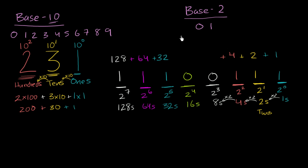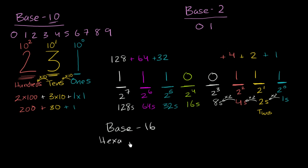You can imagine that we can keep extending this. We can extend to base three, four, five, six, seven, eight, nine, or we could even go above 10. What I want to show you in this video is a fairly heavily used number system that has more digits than base 10, and that is base 16, often called the hexadecimal number system.